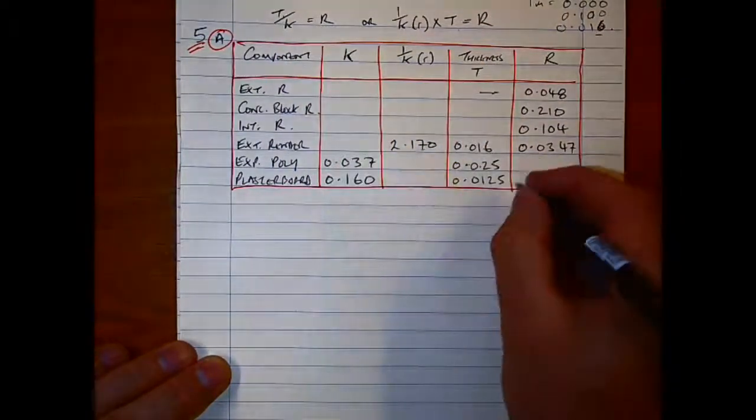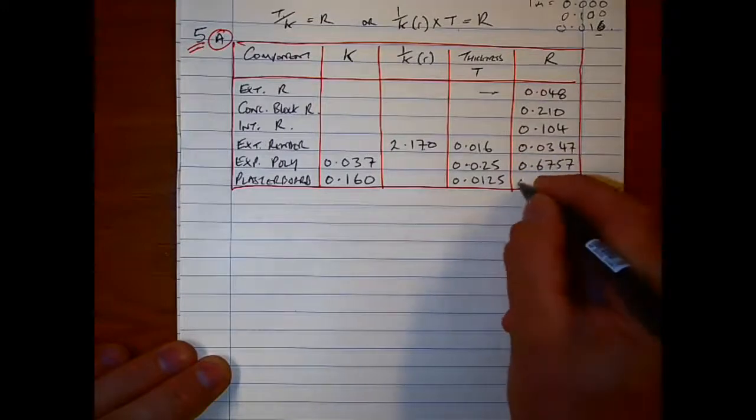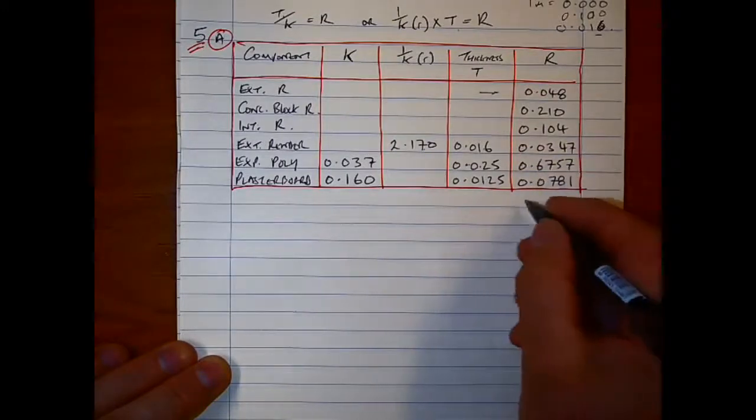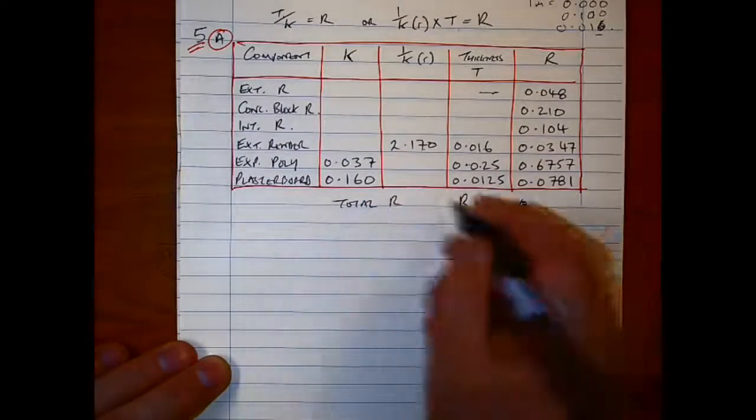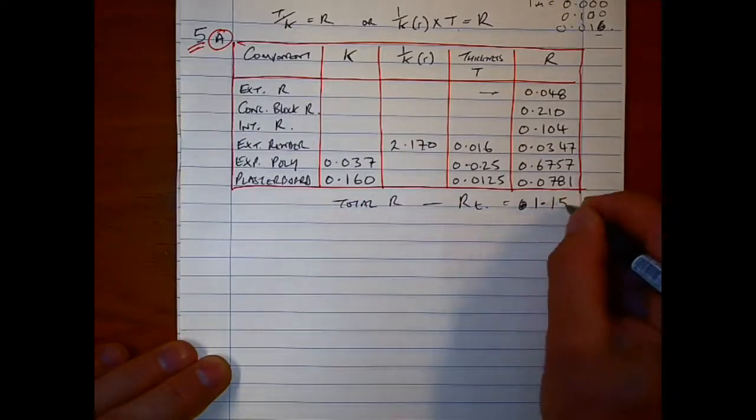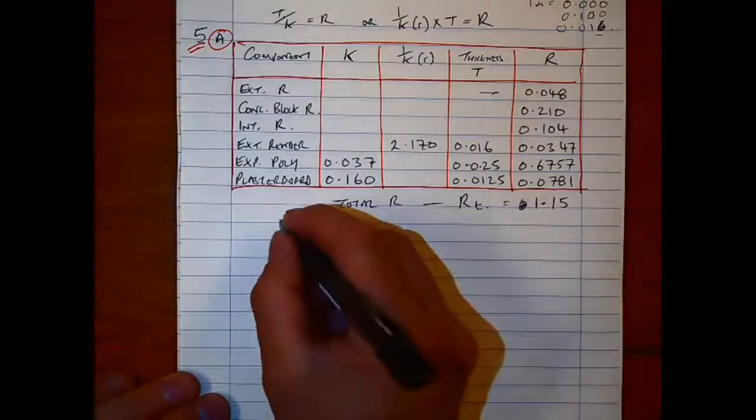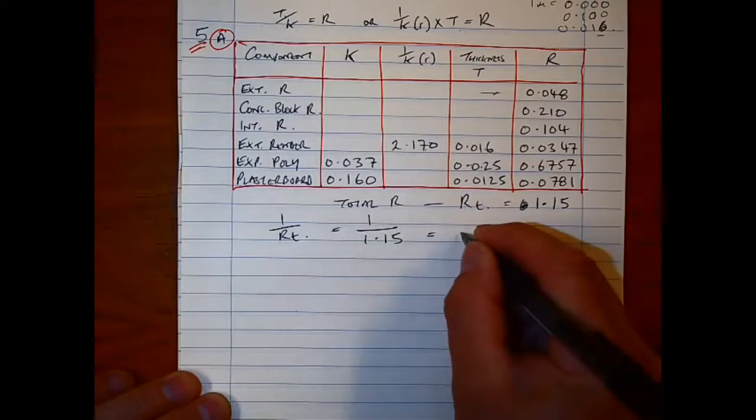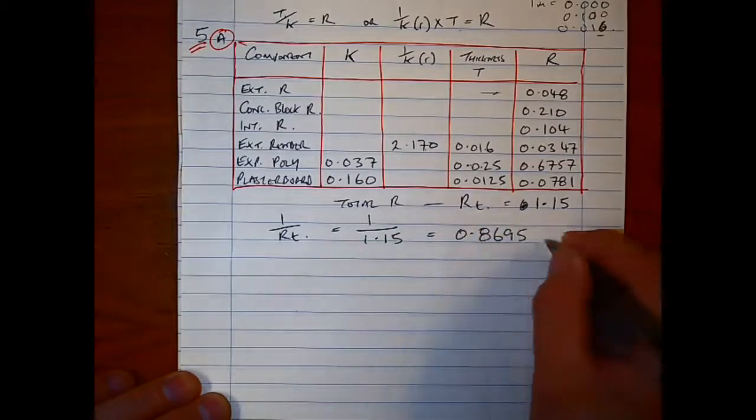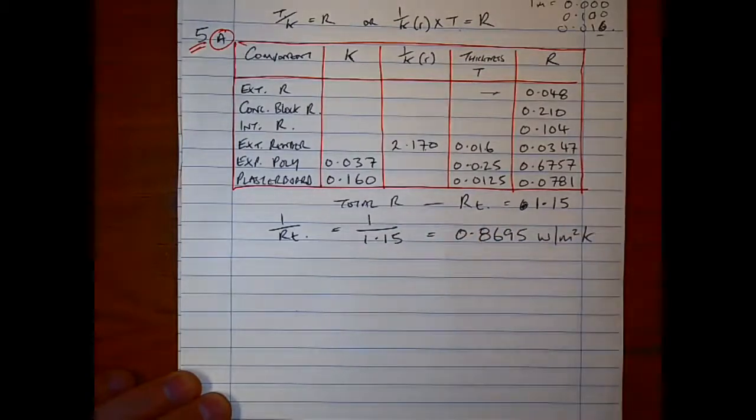So to start off with, here are the two formulas: you're multiplying the resistivity by the thickness, or you're dividing the thickness by the conductivity as shown above. I haven't done it on the calculator here just to speed things up, as I've done in other videos. It's easy enough to follow. Add up your total R, and then 1 over total R, or RT, is going to give you your U-value.